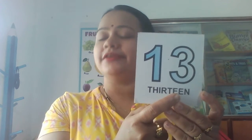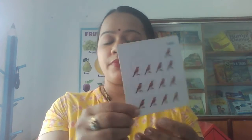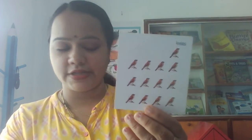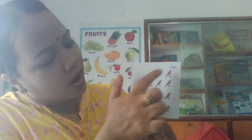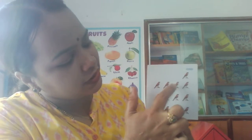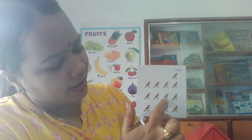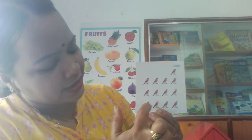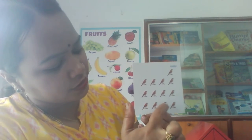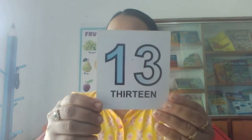After 12 the number is 13 — 1, 3, 13. Now we will count the birds in the picture card. 1, 2, 3, 4, 5, 6, 7, 8, 9, 10, 11, 12, 13. How many birds are there? There are 13 birds. And the number is 13.